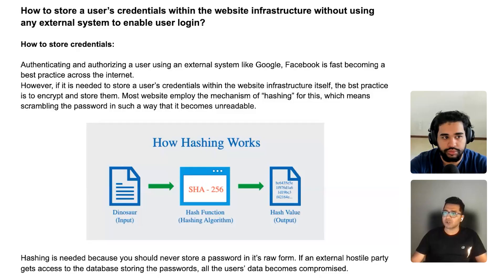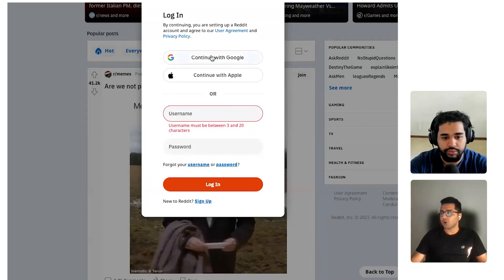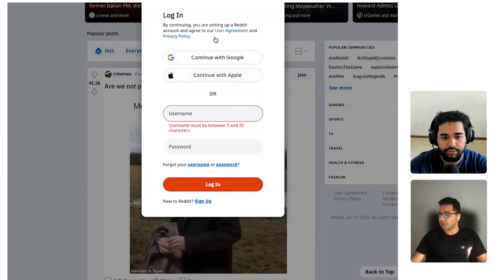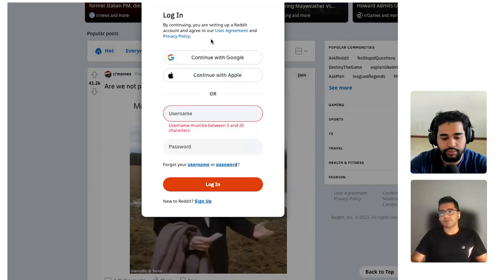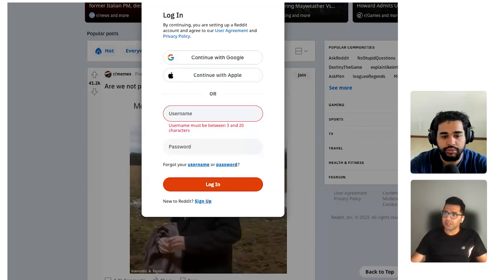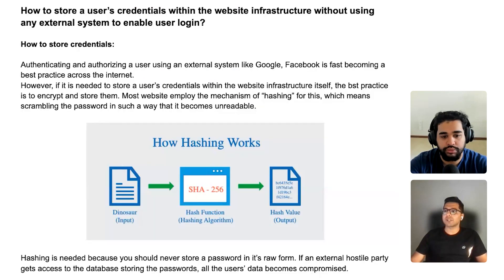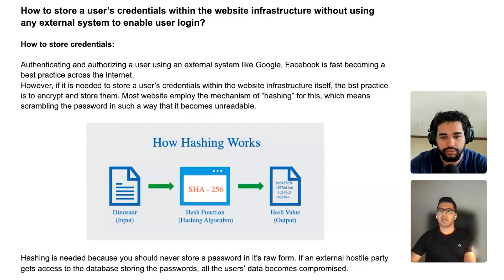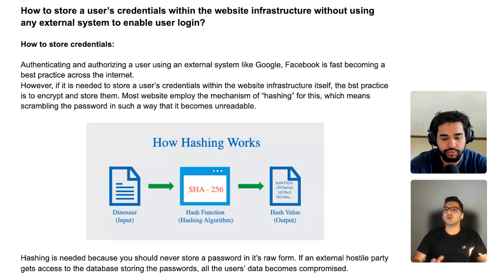So now almost all websites use something like this — you can continue with Google or continue with Apple, and a lot of websites also have Facebook. The whole reason for doing this is that you are offloading your authentication and authorization to some third party where the users already have an account, so that you do not have to store usernames and passwords within your own infrastructure. That makes things much safer.